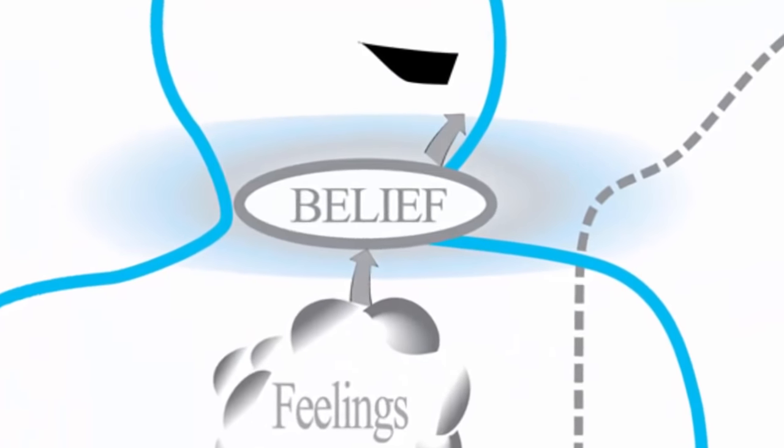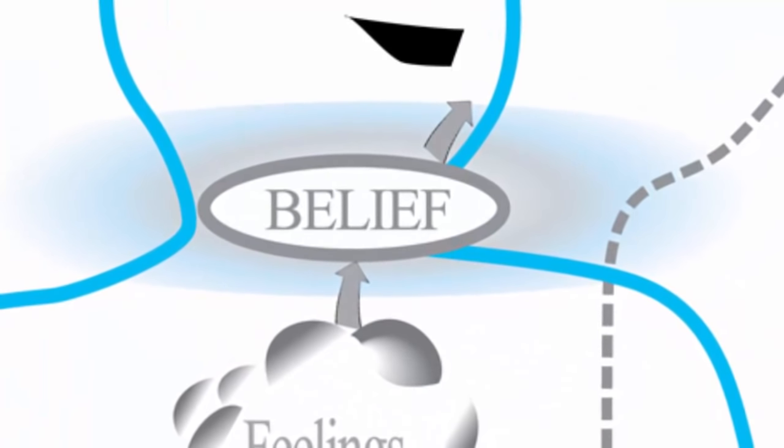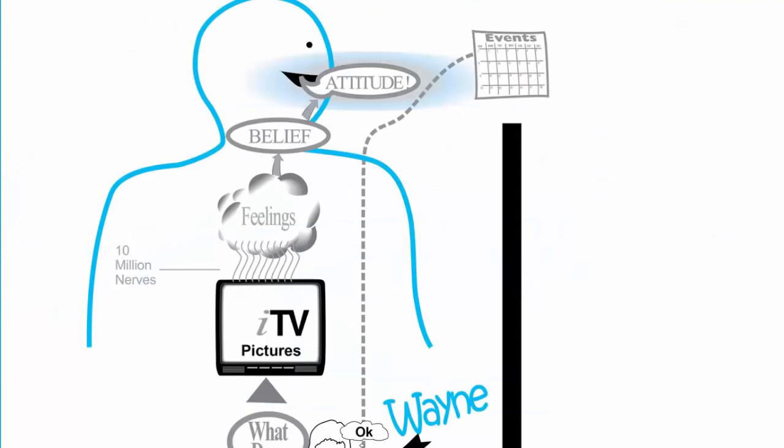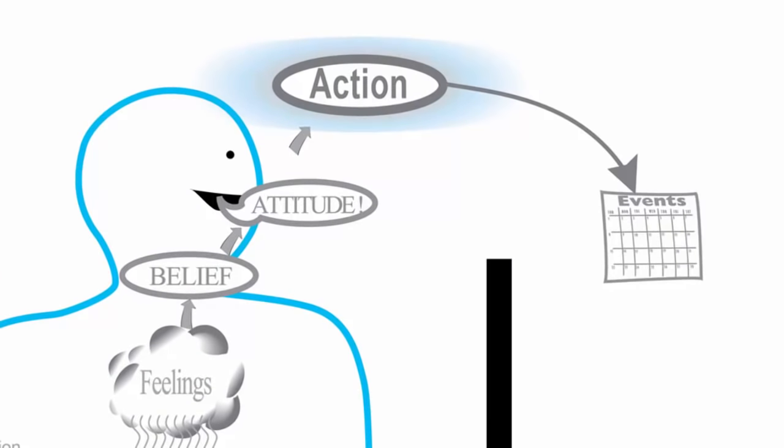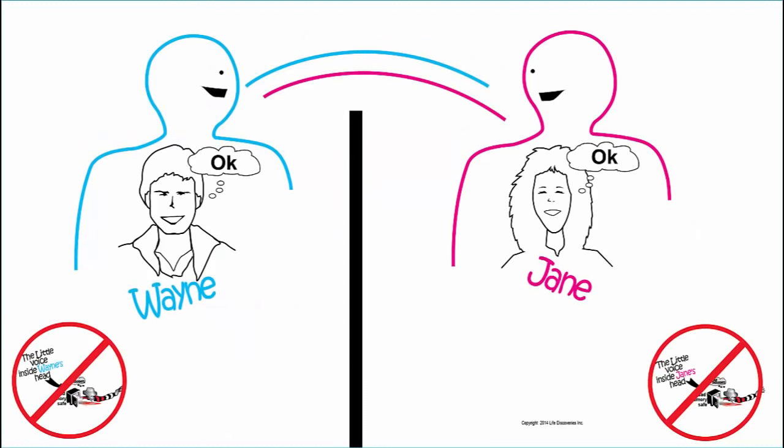So Wayne would believe his good feelings are true. His belief then would create a good attitude and his good attitude would create Wayne's good behavior. What would Jane do? What would anyone do when another person treats them good? They would return the good they receive.